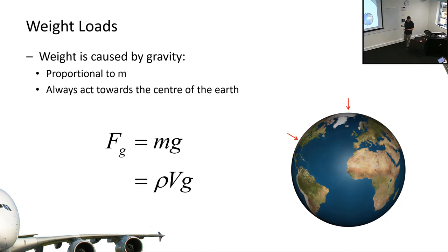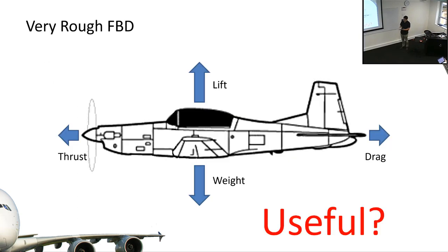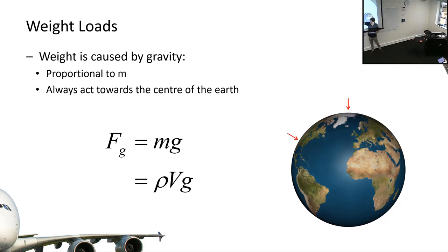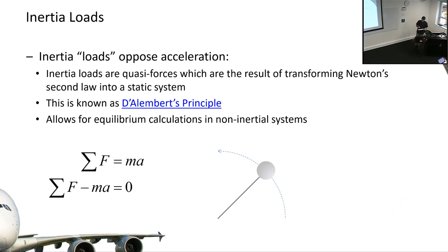Let me take a side note about the nature of these loads. Weight always acts towards the ground - precisely towards the center of the earth - and is proportional to the mass of the aircraft. For most cases near the surface of the earth, the force due to gravity is very simply calculated. For a distributed mass like fuel, we just take its density, multiply by the volume, then by the gravitational constant, and we have a force.